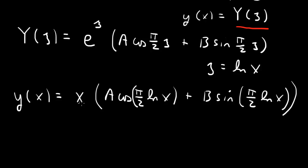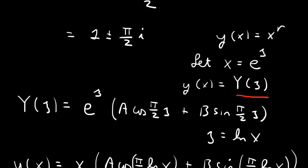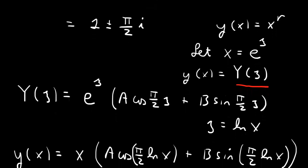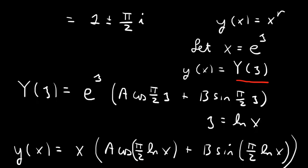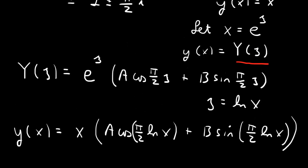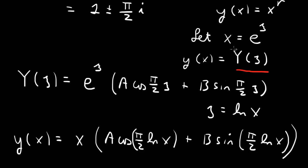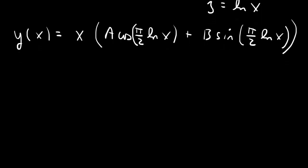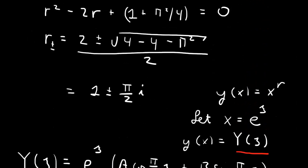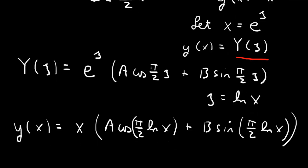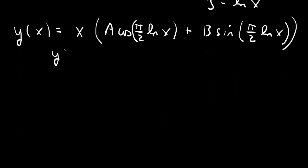You can either remember this formula directly, which comes from having complex conjugate roots of the characteristic equation for the Cauchy-Euler equation, or use the mnemonic of converting to a constant coefficient equation where the power law becomes an exponential. So that becomes our general solution, and then we apply the two boundary conditions: y of 1 equals 1 and y of e equals e.